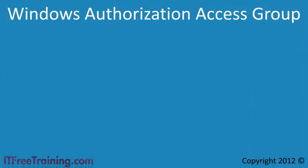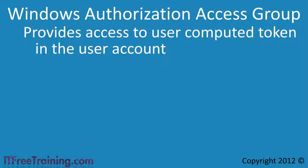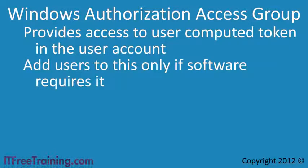The next group is Windows Authorization Access group. This group provides access to an attribute in the user account that provides a computed token for that user. A token is created when a user logs in and tells other systems what the user can access. This attribute allows applications to determine what the user has access to by looking at this pre-computed token, meaning software can access information inside the token without the user having to be logged in. You should only add users to this group if software specifically requires it.